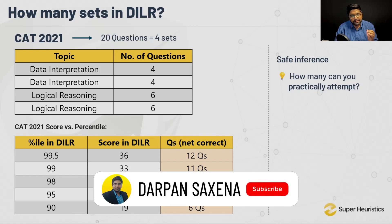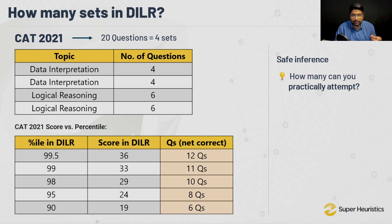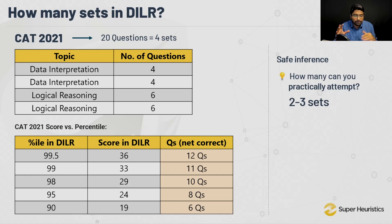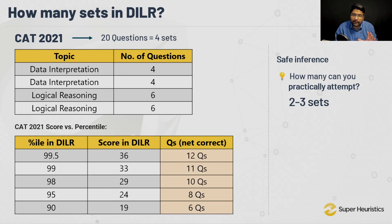The answer is simple — practically, even the best of the best can attempt 3 sets. Some might do 3.5 sets. It is very unlikely anyone can do 4 sets because the paper is not made that way. Solving 4 sets of 4 and 6 questions in 40 minutes is very impractical. Even those scoring at 99.5 are effectively getting 3 sets right. So hard code in your mind: your maximum limit in DILR is 3 sets.